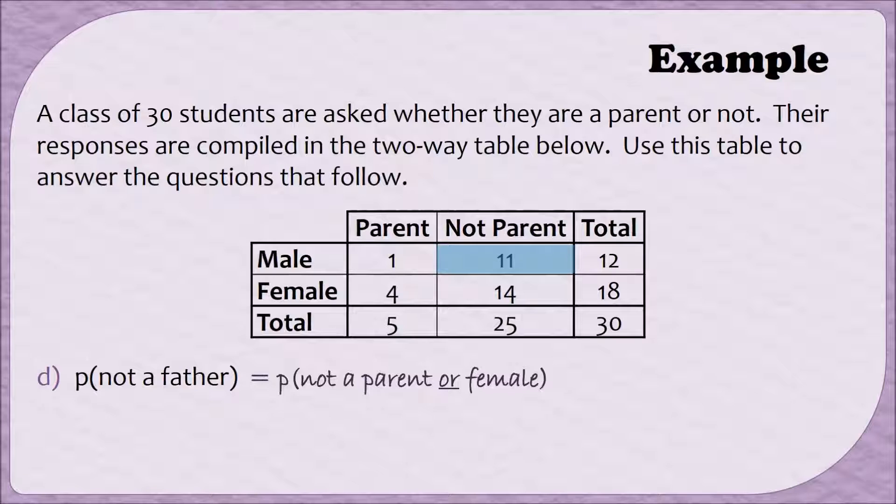When I look at the boxes involved, these 11 people were men who were not parents, so we need to include them. These 14 people are also in the column not parent, so we need to include them. And these four people are parents, but they were females, so they're not fathers. So my numerator can be found by adding all of these numbers up, and then we can divide by the total number of people, or 30. When I simplify my numerator, I get a total of 29 out of 30, which in decimal form is going to be 0.9 with repeating sixes.